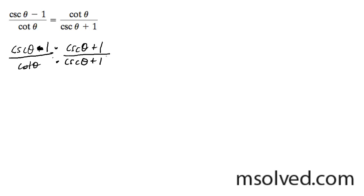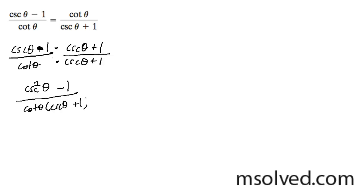What happens here: we get cosecant squared theta minus 1 on the top, and then cotangent theta quantity cosecant theta plus 1. This right here is equal to cotangent squared.